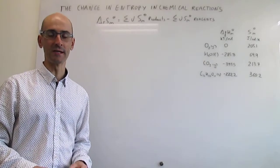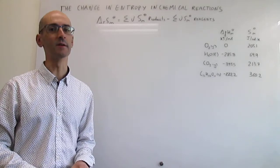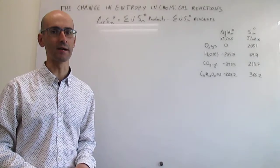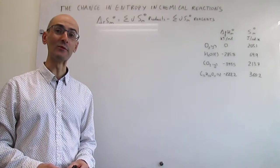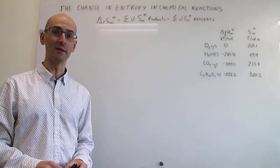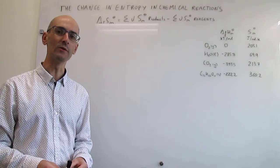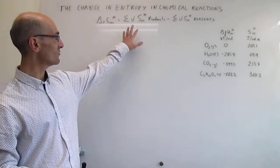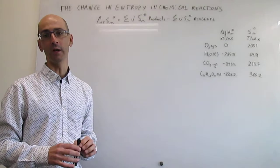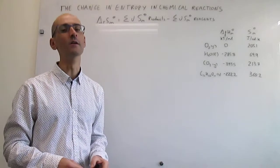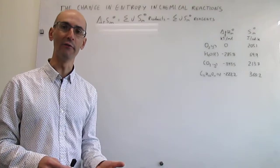In this video we're going to see an explicit calculation for the change in entropy in a chemical reaction. In the last couple of videos we introduced the concept of absolute molar entropies and how they can be used to calculate the change in entropy in a chemical reaction, and we also saw the origin of those absolute molar entropies via the third law of thermodynamics.